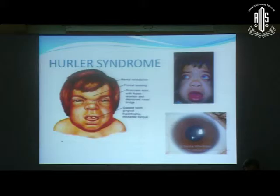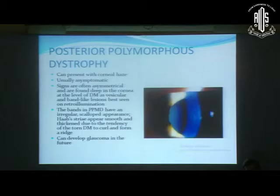For example, this child with Hurler syndrome shows frontal bossing, prominent eyes with hypertelorism, depressed nasal bridge, gapped teeth with gingival hypertrophy, and a thickened tongue — illustrating the dysmorphic features associated with mucopolysaccharidosis.